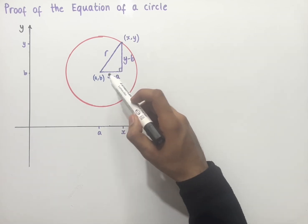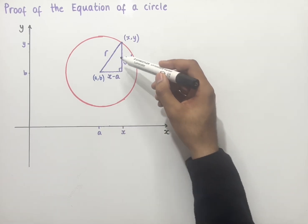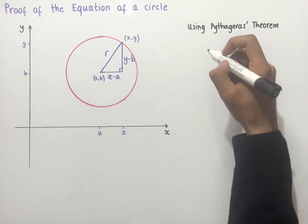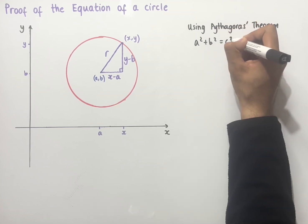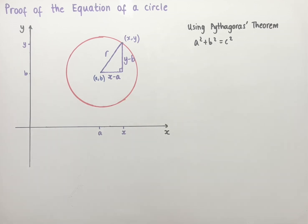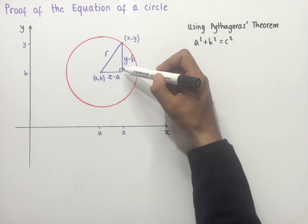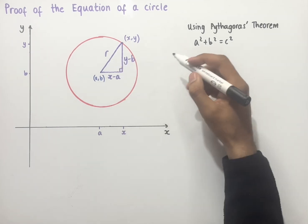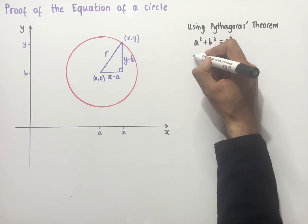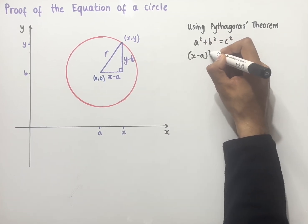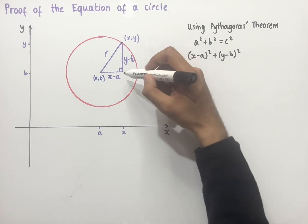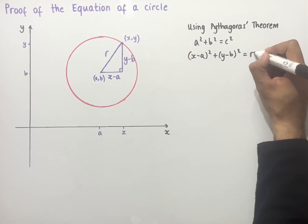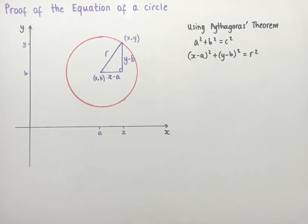For any right angle triangle we can use Pythagoras's theorem, so let's apply that to this triangle. Pythagoras's theorem states that a squared plus b squared equals c squared, where a, b and c are the side lengths and c is the hypotenuse. In this triangle the hypotenuse is the side opposite the right angle, which is r. So we have: (x minus a) all squared plus (y minus b) all squared equals r squared.